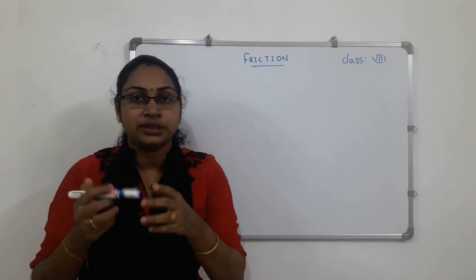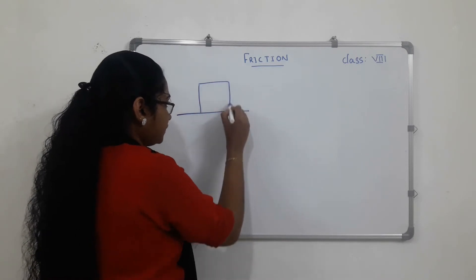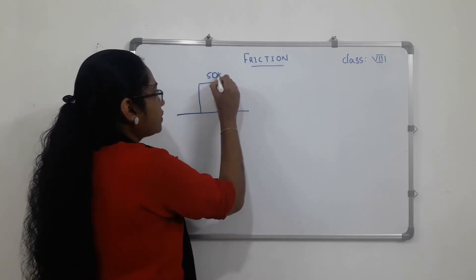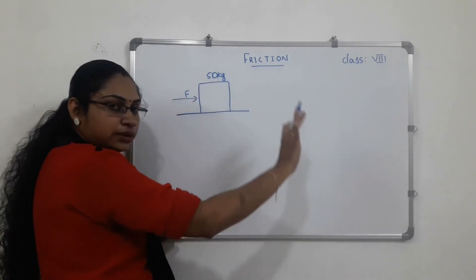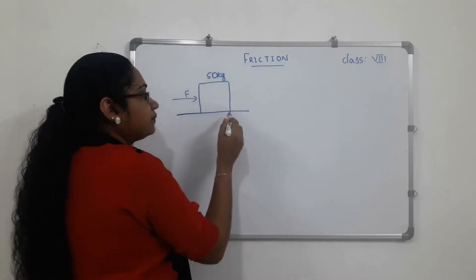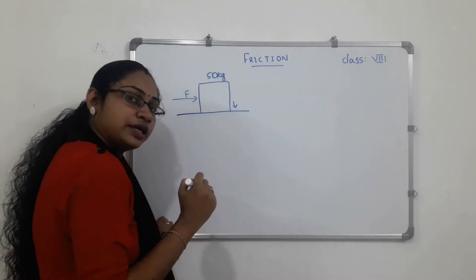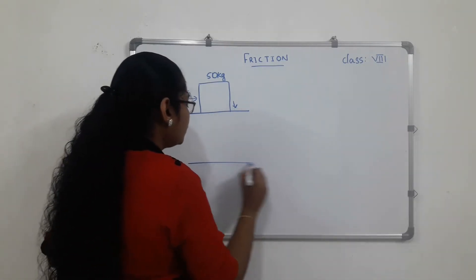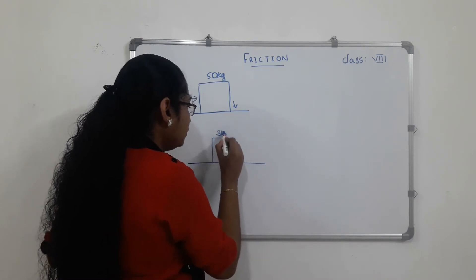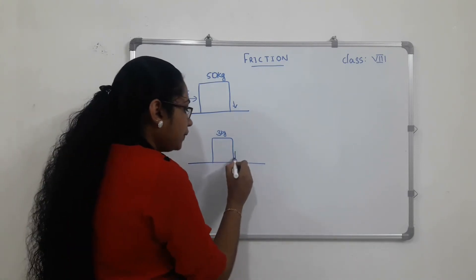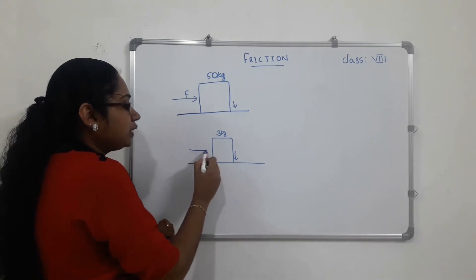I will explain with an example. This is a heavy box — about 3 kg. The applied force is the force acting on the heavy box. A larger applied force results in greater friction.